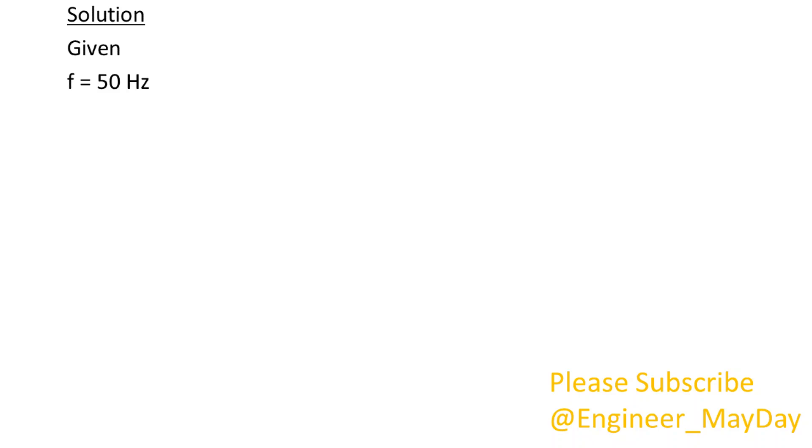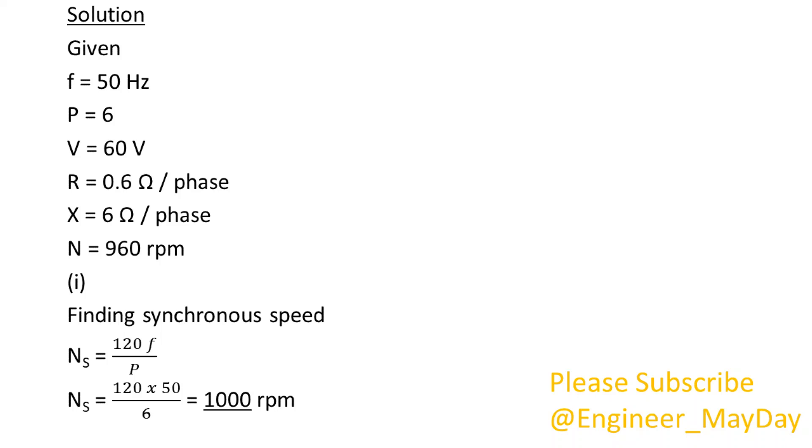Solution. Given: F equals 50 Hz, P equals 6, V equals 60 volts, R equals 0.6 ohms per phase, X equals 6 ohms per phase, N equals 960 RPM. Finding synchronous speed: Ns equals 1000 RPM.